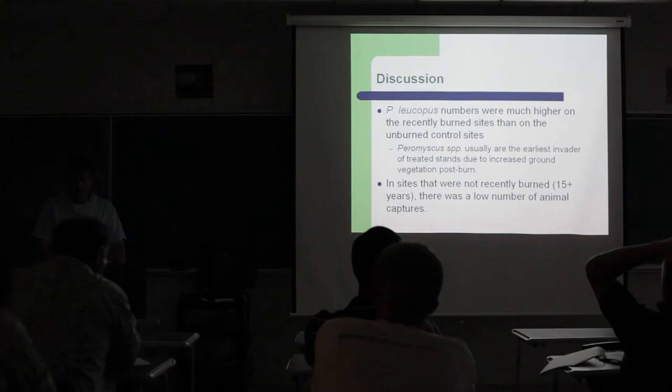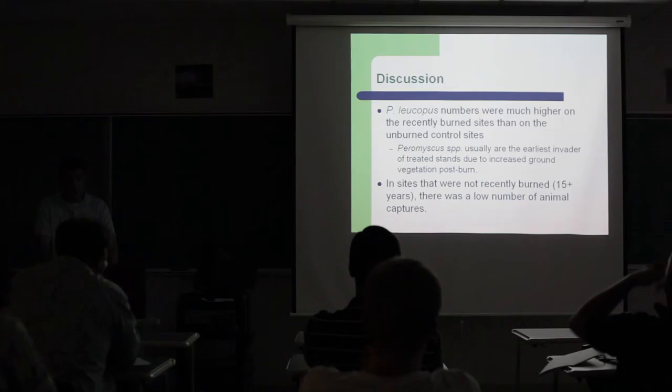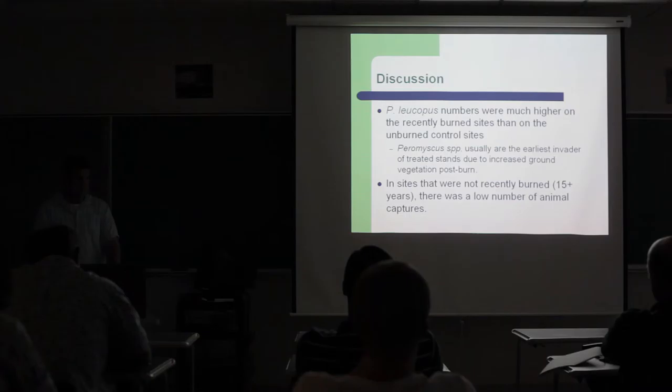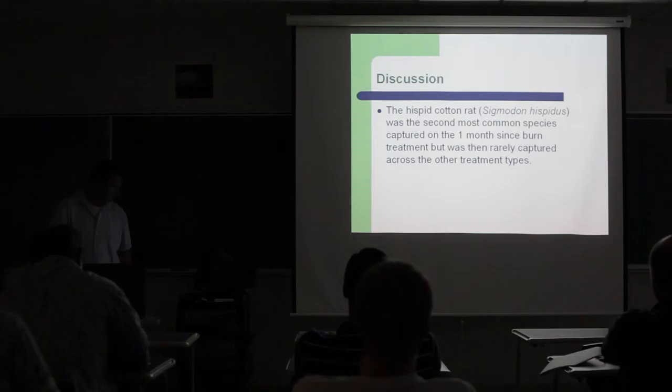Peromyscus numbers were much higher on the recently burned sites than on the unburned control sites. Peromyscus are usually the earliest invaders of treated stands due to increased ground vegetation post-burn. Higher Peromyscus populations on burn sites have been attributed to better visibility and abundance of seed, a food source. In sites that were not recently burned, there was a low number of animal captures. Small mammal populations have been shown to be lower in older, more open forested areas that have little vegetation close to the ground.